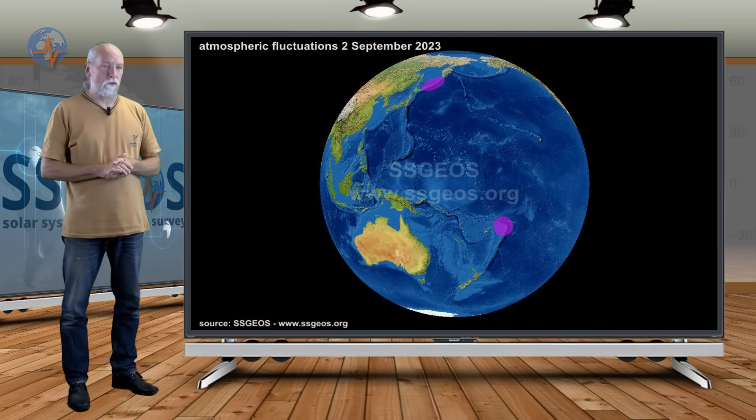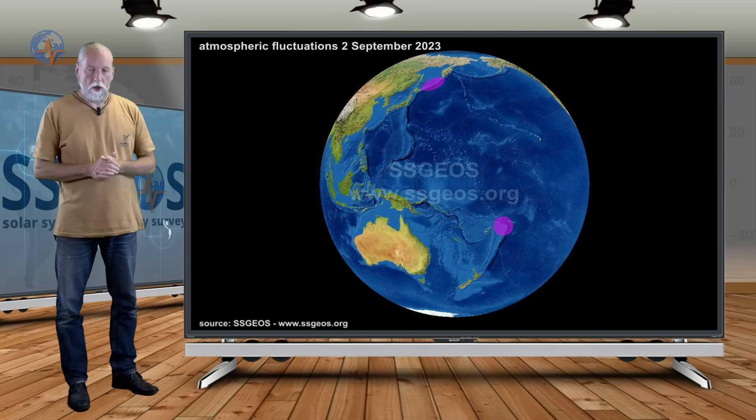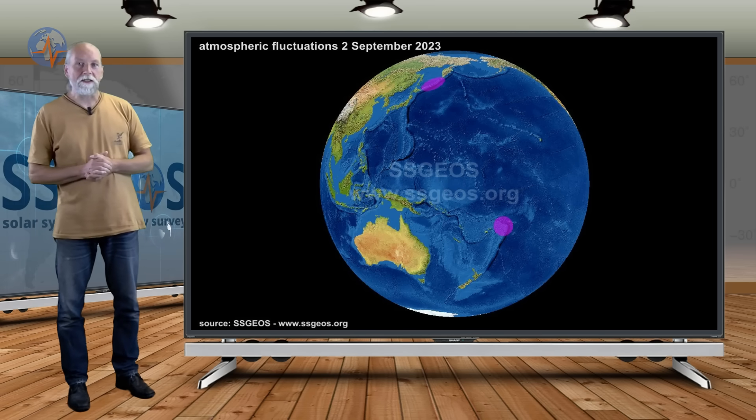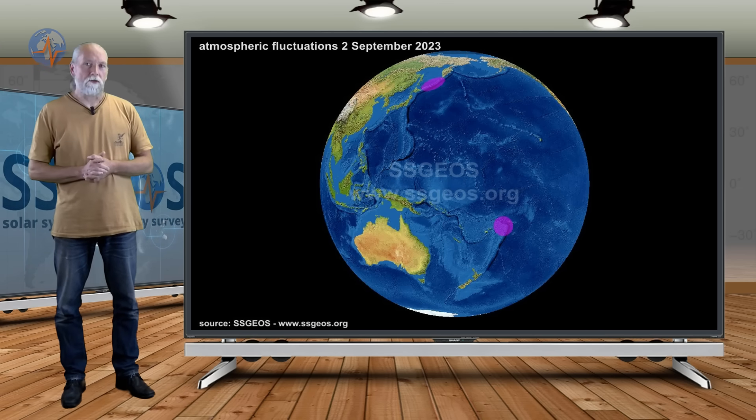We do not know for sure where the next big quake is going to occur, but the atmospheric fluctuations can be a significant indicator. Always check out the latest updates on the website, including the atmospheric fluctuations.